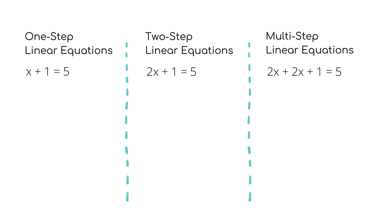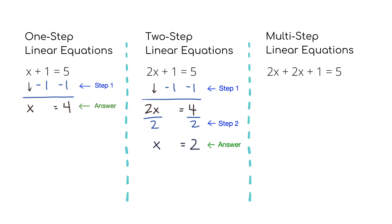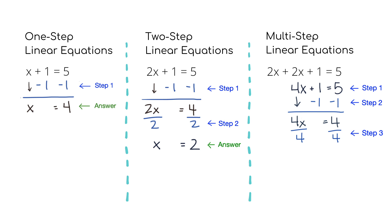These equations are called multi-step equations because it now takes multiple steps to solve the equation. For example, for the first equation on the left, it only takes one step to solve. For the two-step equation, it takes two steps. For the multi-step equation, it takes three steps, or sometimes more. Regardless, your end goal and the steps are the same — it's to isolate x and figure out what x equals.